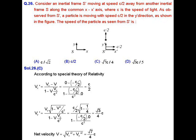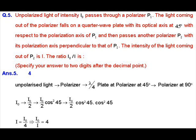So v_y prime equals c by 2 root of 1 minus 1 by 4 upon 1 minus minus c by 2 into 0 upon c square. The net velocity v prime equals square root of v_x prime square plus v_y prime square equals root 3 upon 4 c, so v_y prime equals root 3 c upon 4.